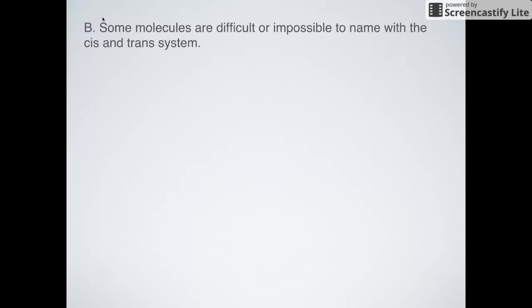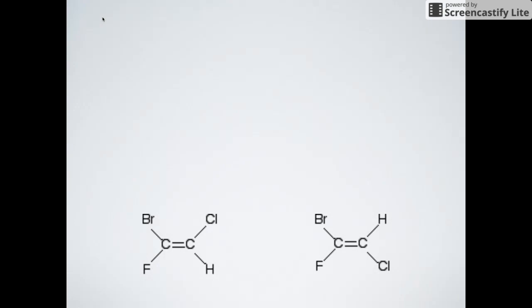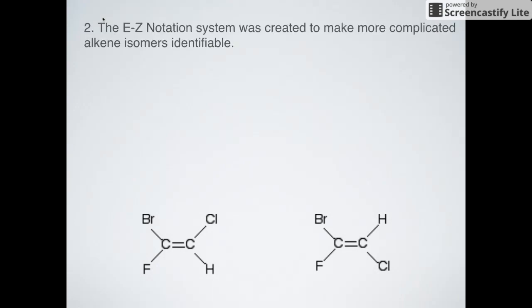So why do we even have another system called E-Z notation? Some molecules are probably going to be really hard to name with the cis-trans system. For example, what if I gave you something like this and asked you which of these structures is cis and which of them is trans? I've got bromine, fluorine, but I also have chlorine and hydrogen. How would I figure out which ones are on opposite sides and which ones are on the same side? In reality, it's extremely difficult and impossible to use the cis-trans system. So luckily there's E-Z notation, which was created to make these more complicated cases easier to understand.